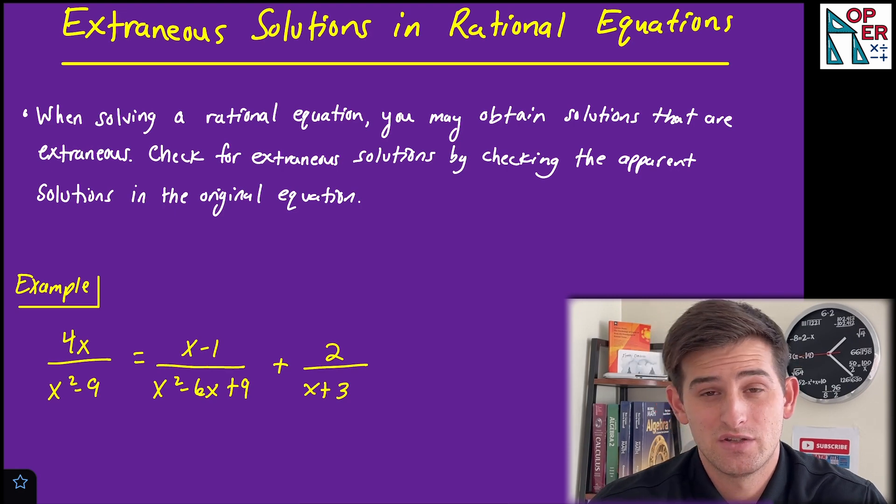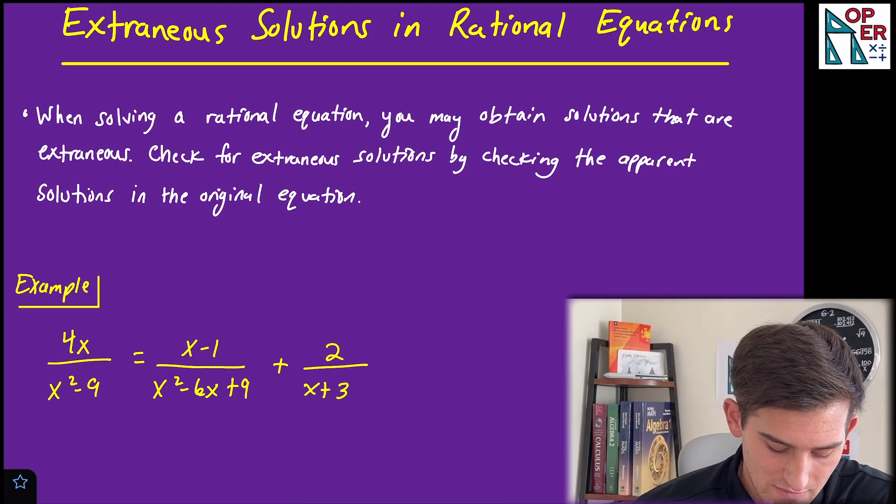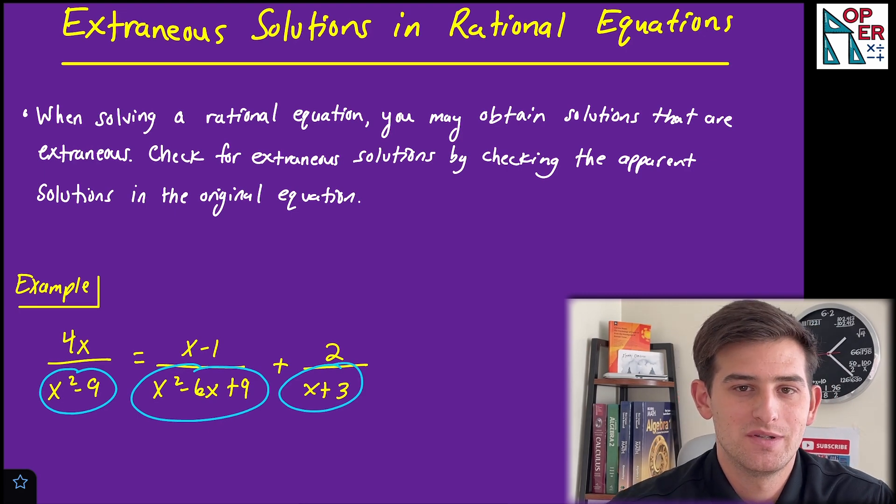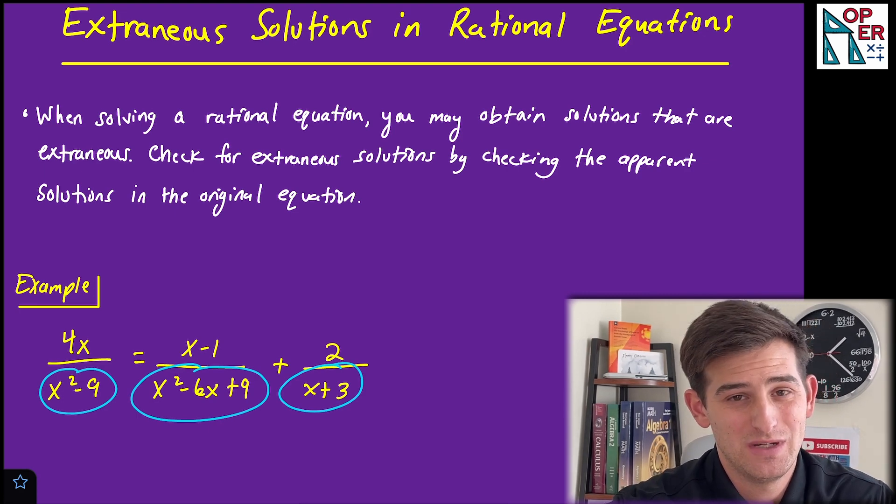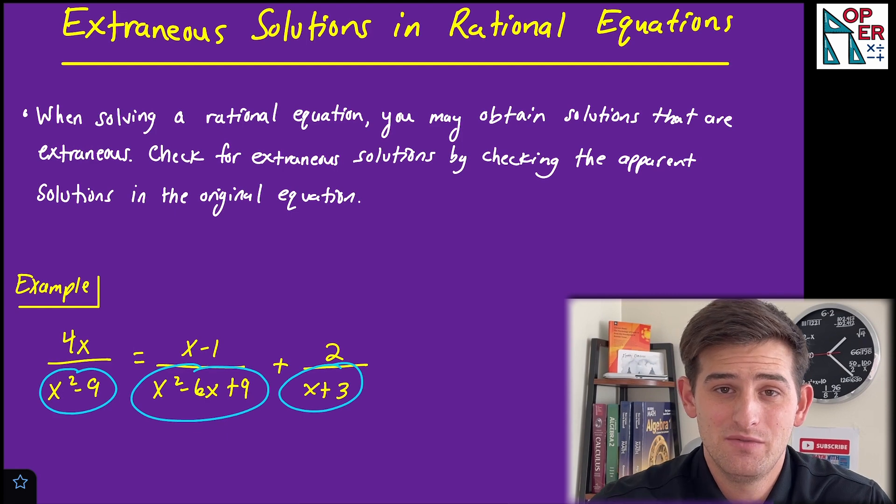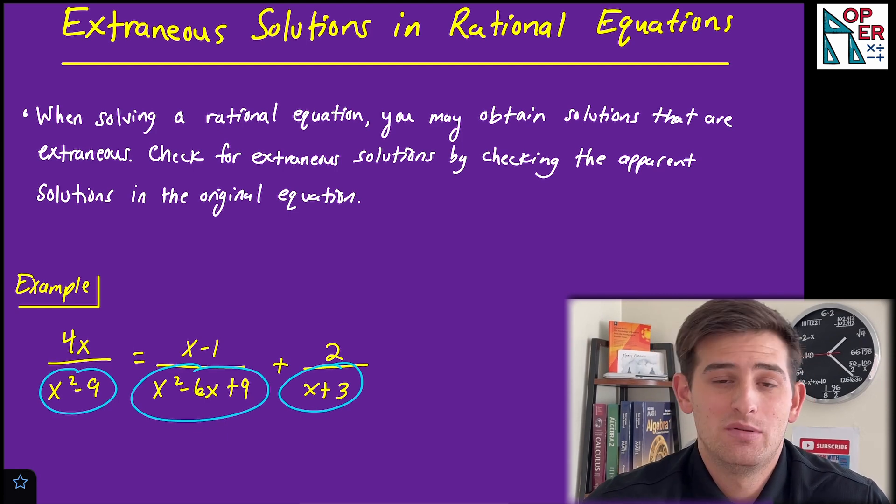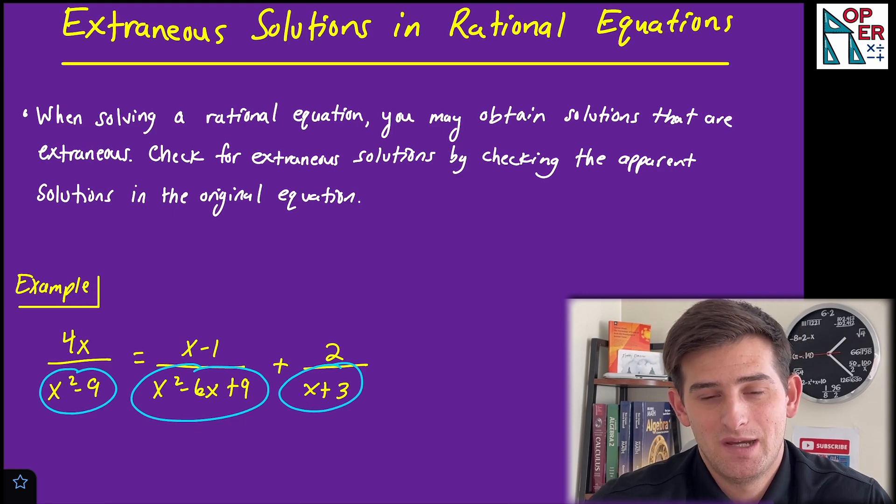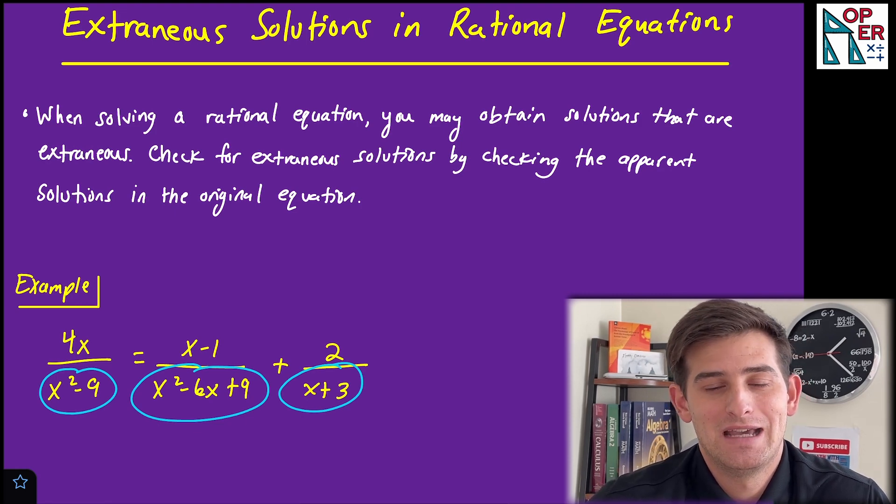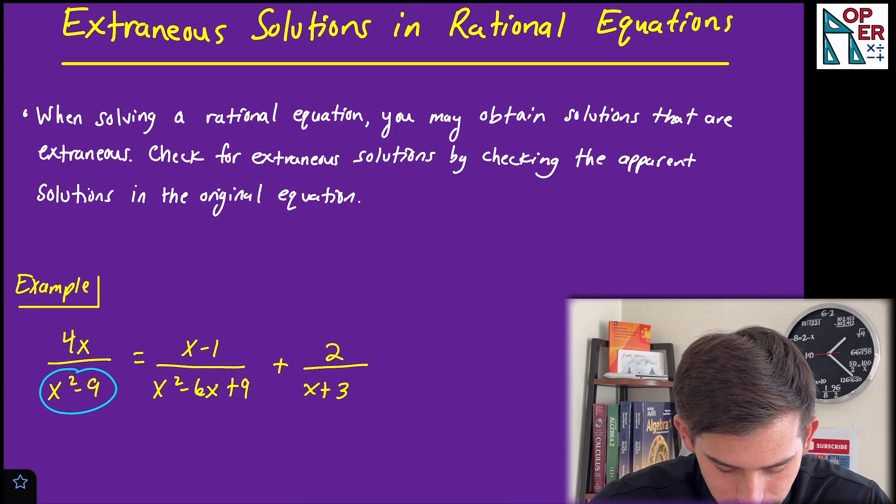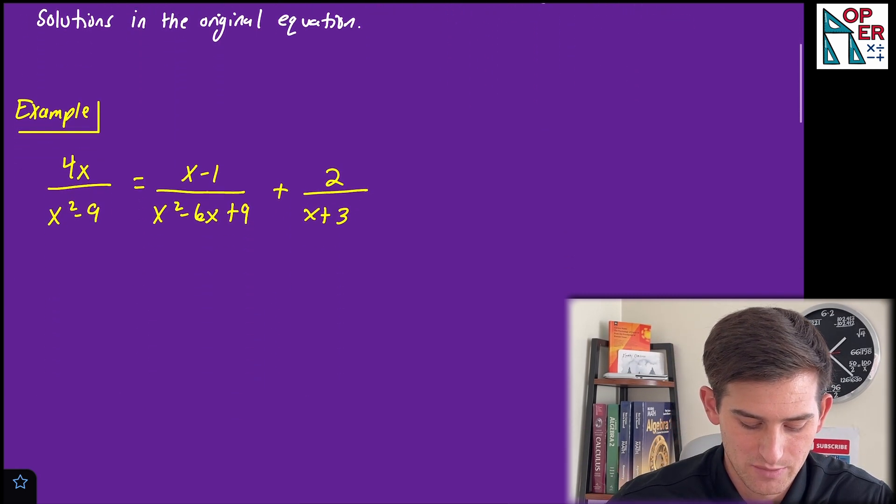So if we think about that in terms of rational equations, notice that we have variables in our denominators. So there's certain numbers that we can't plug in for X because if we did, it would give us a denominator of zero and we know that's undefined. So in the event that we have a number that we plug in for X and it gives us zero in the denominator, whatever number we plug in for X, that's gonna be our extraneous solution. So let's dive right in and look at our example here.